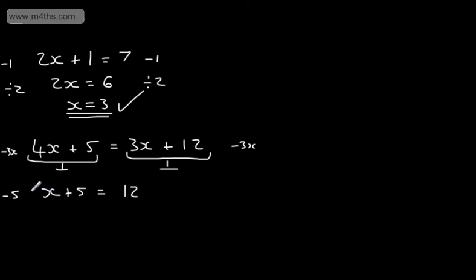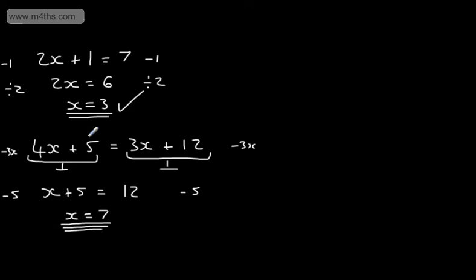We simply need to subtract 5 from both sides of the equation. That will give us that x is equal to 12 minus 5, which is 7. So all I've done is step by step to undo this and get the x's alone on the left and the numbers on the right. We can verify: 4 times 7 is 28, plus 5 is 33. 3 times 7 is 21, plus 12 gives 33. So we know that answer is correct.